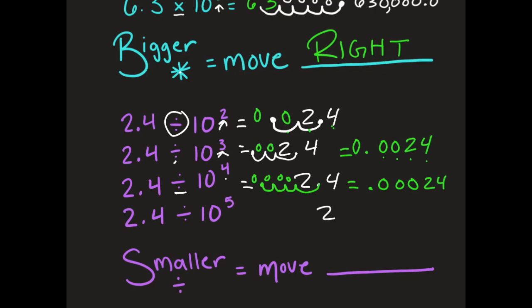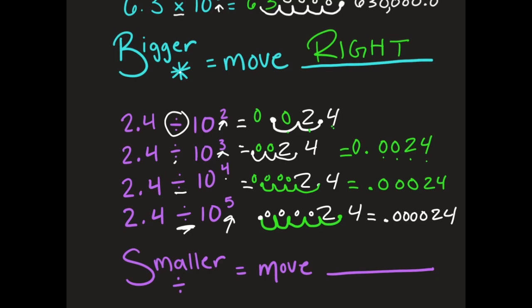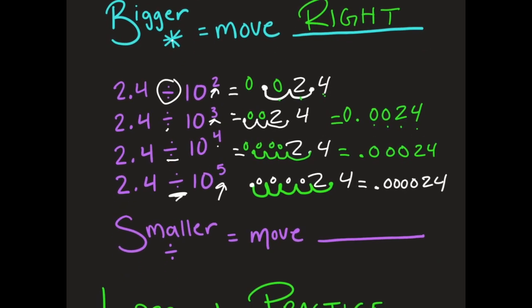Finally, I have 2 and 4 tenths getting smaller by 5. I take my decimal point and make it smaller 5 times: 1, 2, 3, 4, 5. Fill in those places with zeros — four zeros — and that's 24. A very small number. When we're getting smaller and dividing, we move the decimal point to the left.